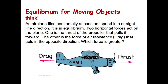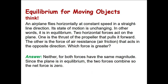An airplane flies horizontally at constant speed in a straight line direction, so the plane is in equilibrium. There are two forces acting on it: the thrust to the right, which pushes the plane forward, and the drag — a resistance force — acting in the opposite direction. Since the plane is in equilibrium, both forces must have the same magnitude.